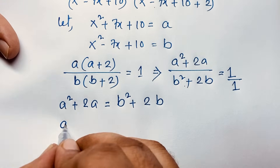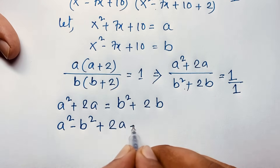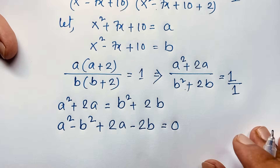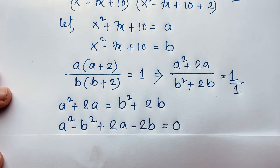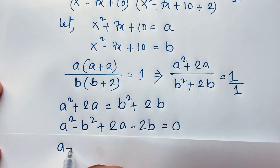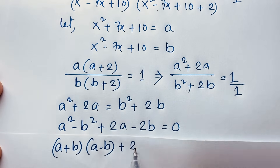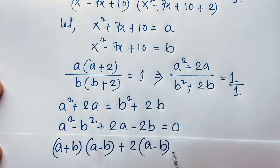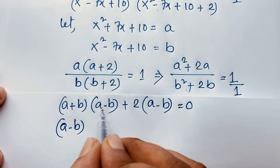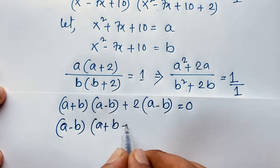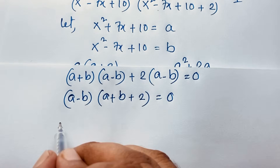Now you can see: a² minus b² plus 2a minus 2b equals 0. Applying the difference of squares formula, (a-b)(a+b) plus 2(a-b) equals 0. Taking (a-b) as common factor: (a-b)(a+b+2) equals 0.